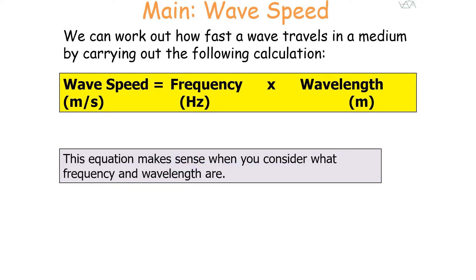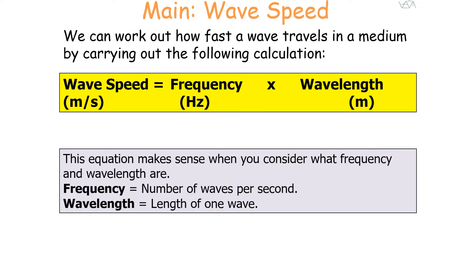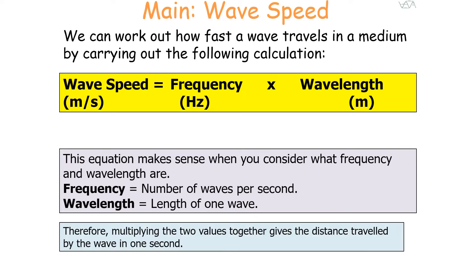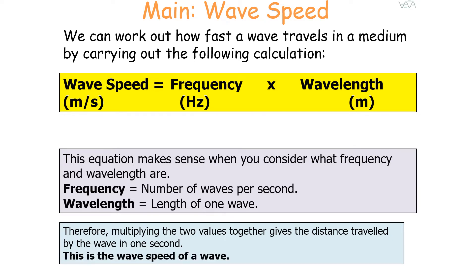The equation wave speed equals frequency times wavelength makes sense when you consider what frequency and wavelength are. The frequency is the number of waves per second, whilst the wavelength is the length of one wave. Therefore multiplying the two values together gives you the distance travelled by the wave in one second, which is the wave speed.